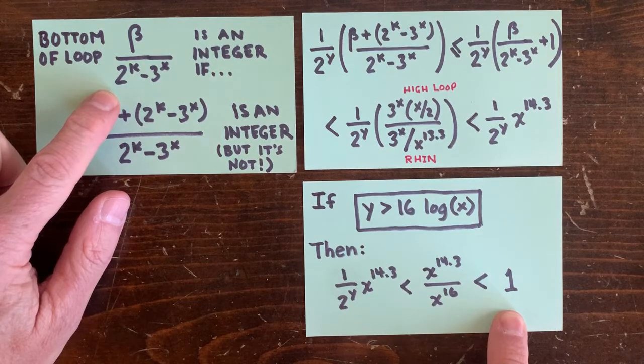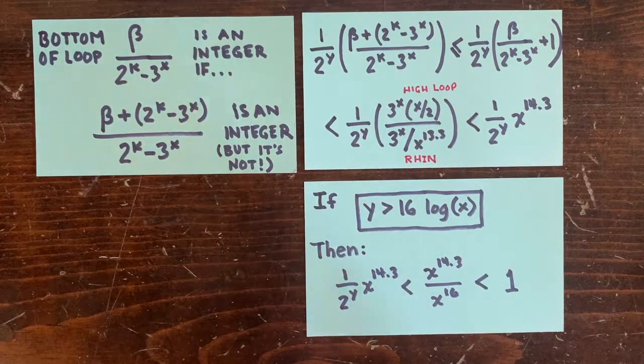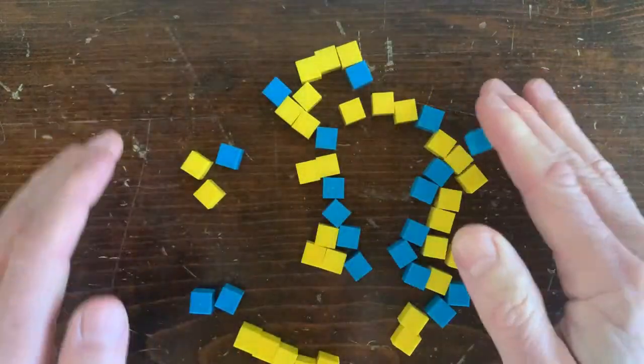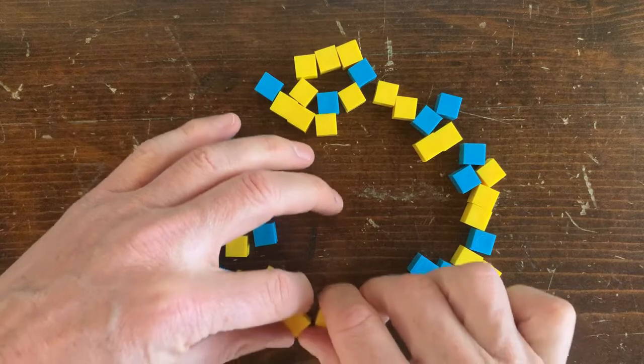So, wow, that says if we've got some huge loop with zillions of members, or x is a zillion, and it starts with more than 16 log x up moves, then it can't be an integer loop.